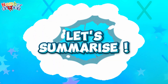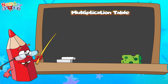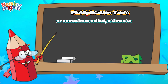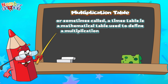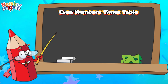Now join me and let's summarize. A multiplication table, or sometimes called a times table, is a mathematical table used to define a multiplication operation for an algebraic system. Let's check out the even numbers times table again.